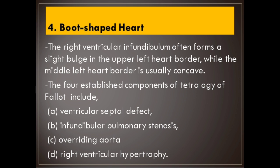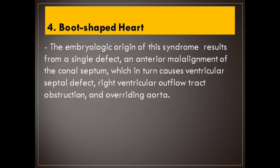The four established components of Tetralogy of Fallot include: (a) ventricular septal defect, (b) infundibular pulmonary stenosis, (c) overriding aorta, and (d) right ventricular hypertrophy. The embryologic origin results from a single defect — an anterior malalignment of the conal septum — which causes ventricular septal defect, right ventricular outflow tract obstruction, and overriding aorta.